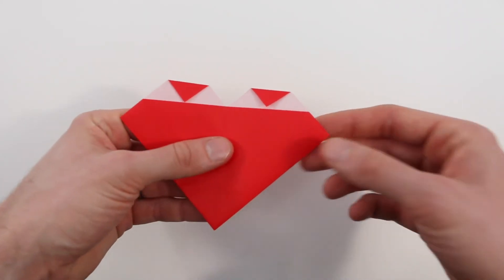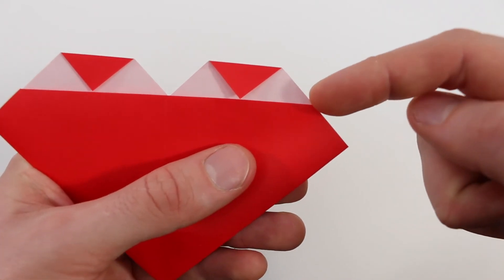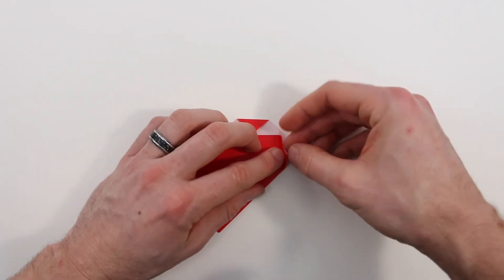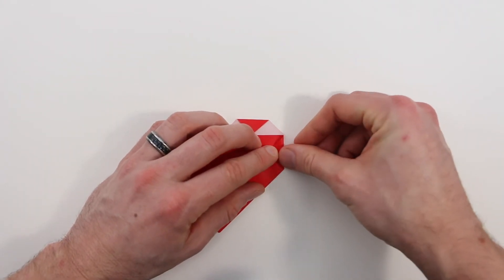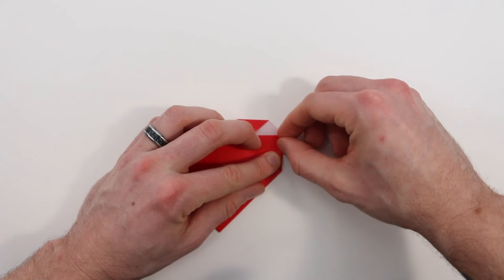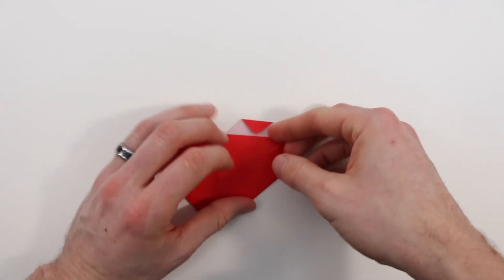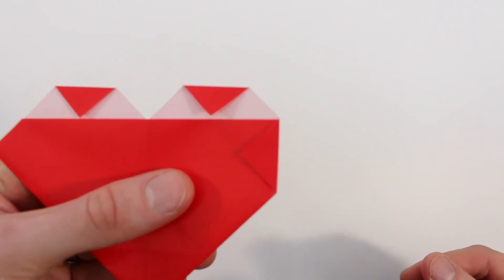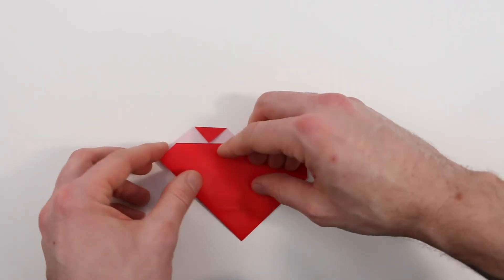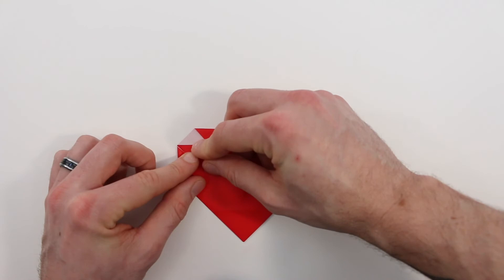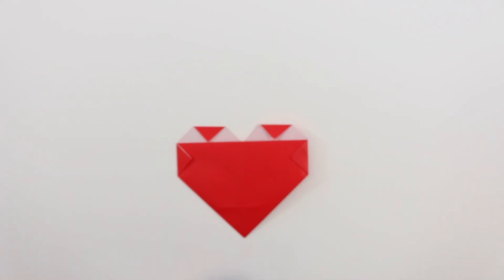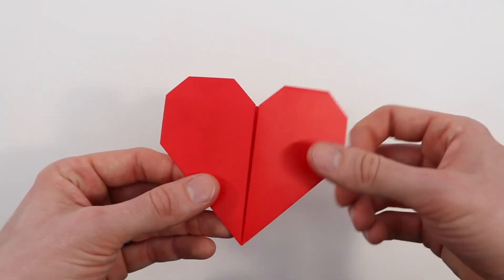Next we're going to fold this corner on the right in, and it's going to make a valley fold that starts right at this intersection here and runs down vertically. I'll show you what I mean. Just like that. Now we'll do the same thing on the left here. Now turn the whole thing over, and then we're all done.